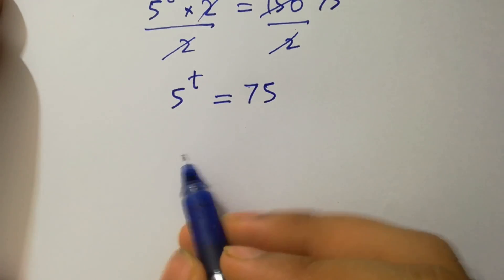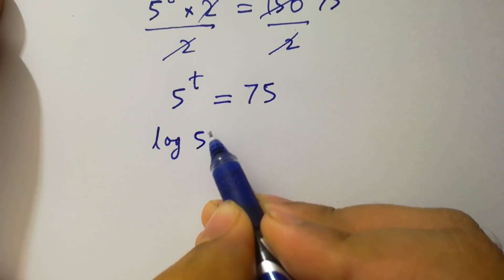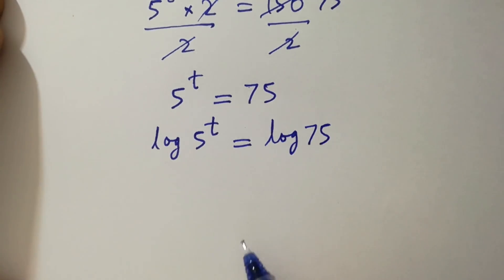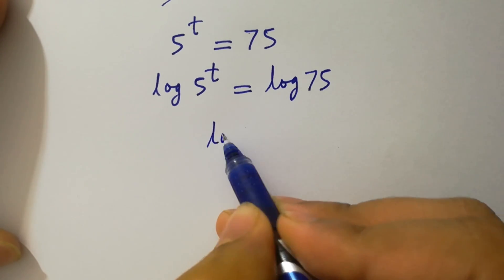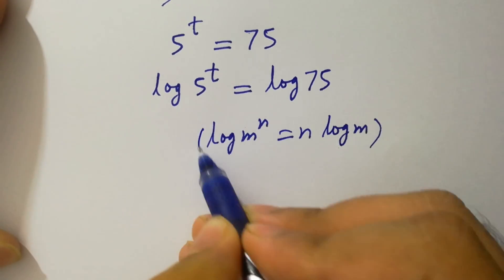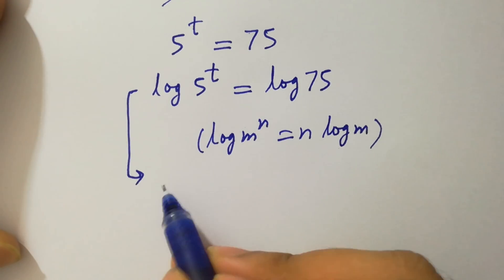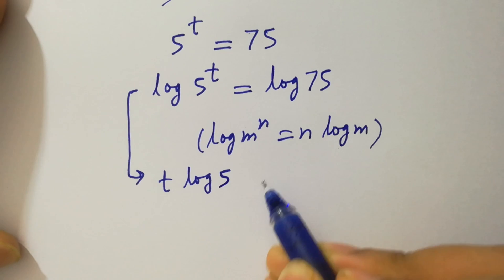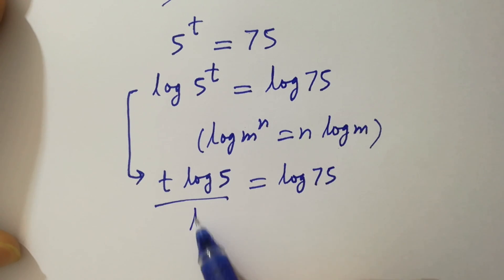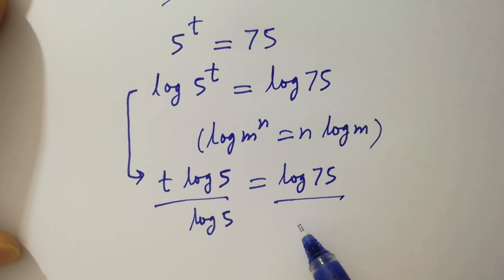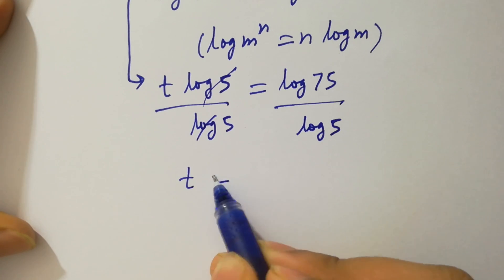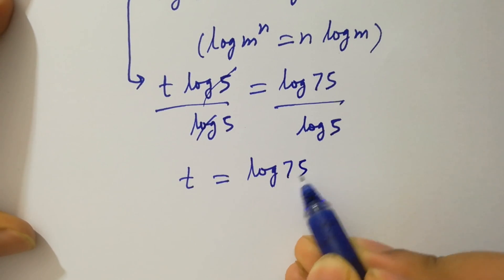Take log on both sides. Log 5 to the power t equals log 75. Since log m to the power n equals n log m, then it will be t log 5 equals log 75. To find t, divide by log 5 on both sides. Log 5 and log 5 cancel, giving t equals log 75 over log 5.